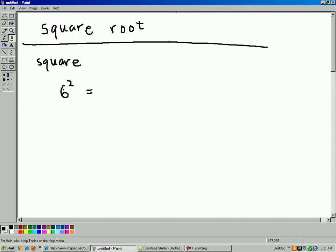So it's a procedure. I'm doing this procedure to the 6. It's called squaring the 6. If you want to write it out in words here, I'm squaring the 6. So that means 6 times 6, which is equal to 36. So that's the squaring procedure.